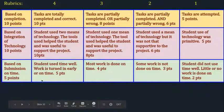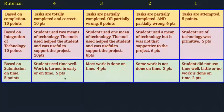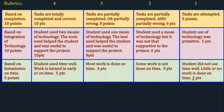Based on submission on time, which is out of 5 points: students used time well and work is turned in early or on time — 5 points. Most work is done on time — 4 points. Some work is not done on time — 3 points. Students did not use time well and little or no work is done on time — 2 points.